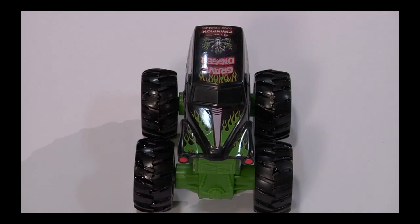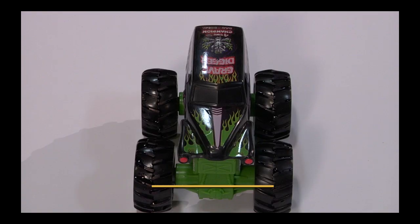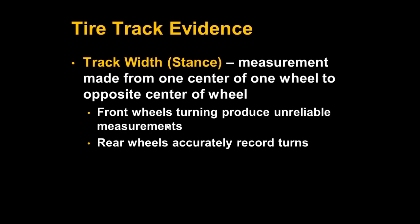Track width or stance is the measurement made from the center of one wheel to the center of the opposite wheel. One thing to keep in mind is that front track width and rear track width will usually be different. In a front wheel drive car, the front wheels provide inaccurate measurements when they turn, so you'll want to rely on the rear track width, meaning the rear wheel dimensions.